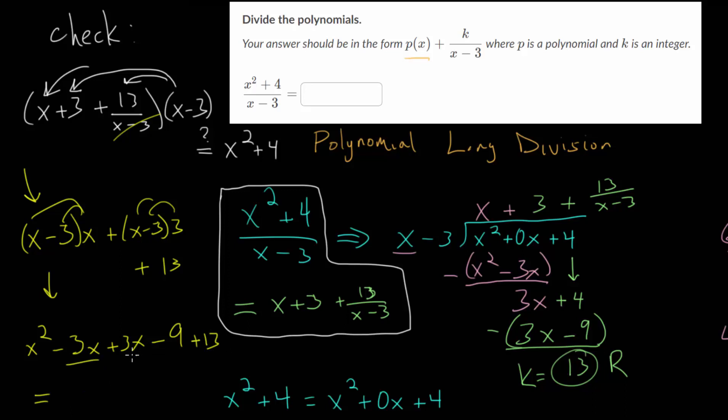So we get x squared, and minus 9 plus 13 is positive 4. We did get back what we expected, which means we can feel confident this is, in fact, the correct answer. So we can put that in the box. When we carry out this division, we get x plus 3 plus 13 over x minus 3.